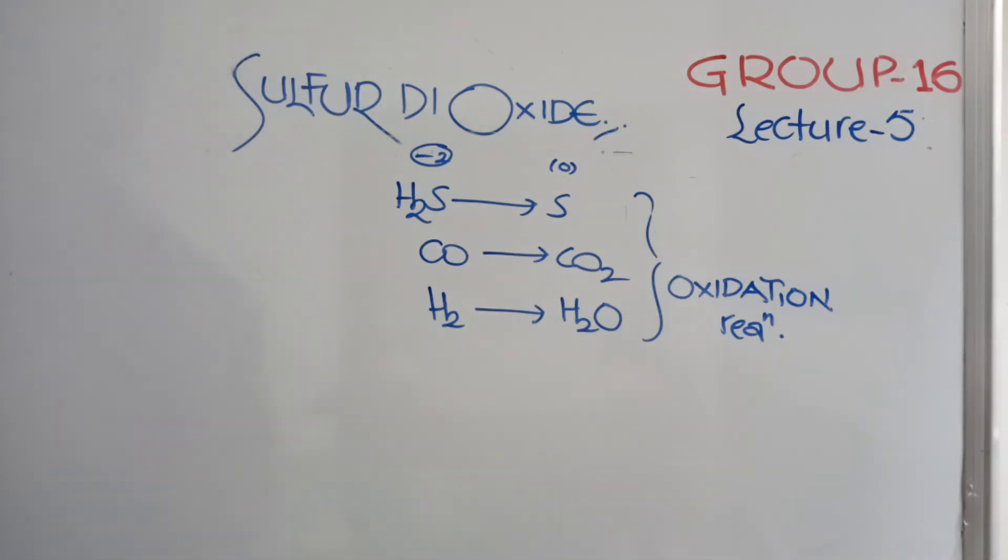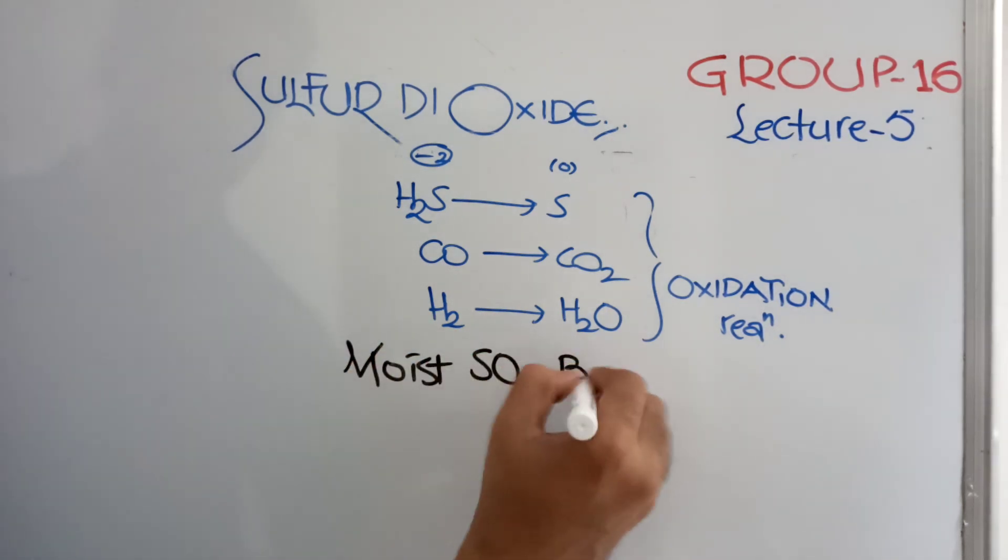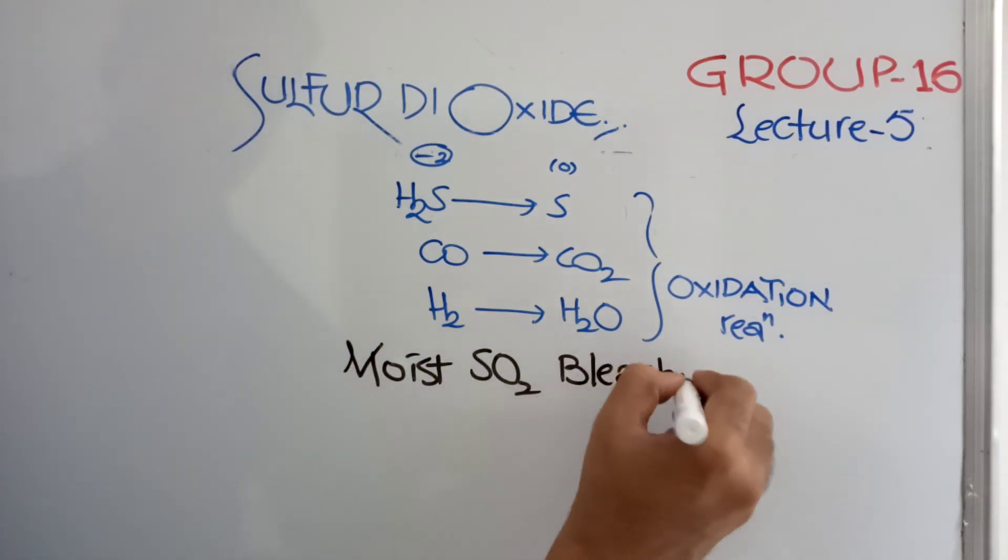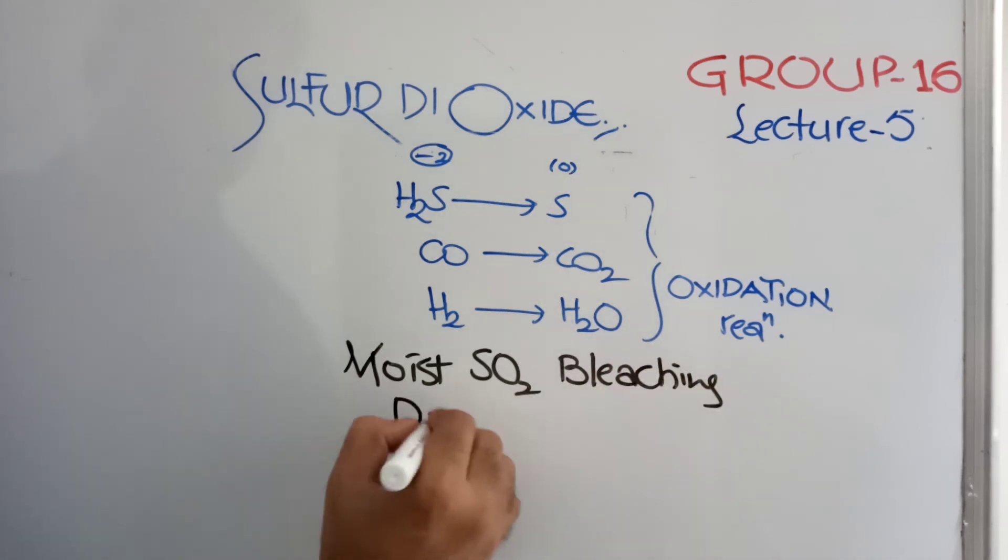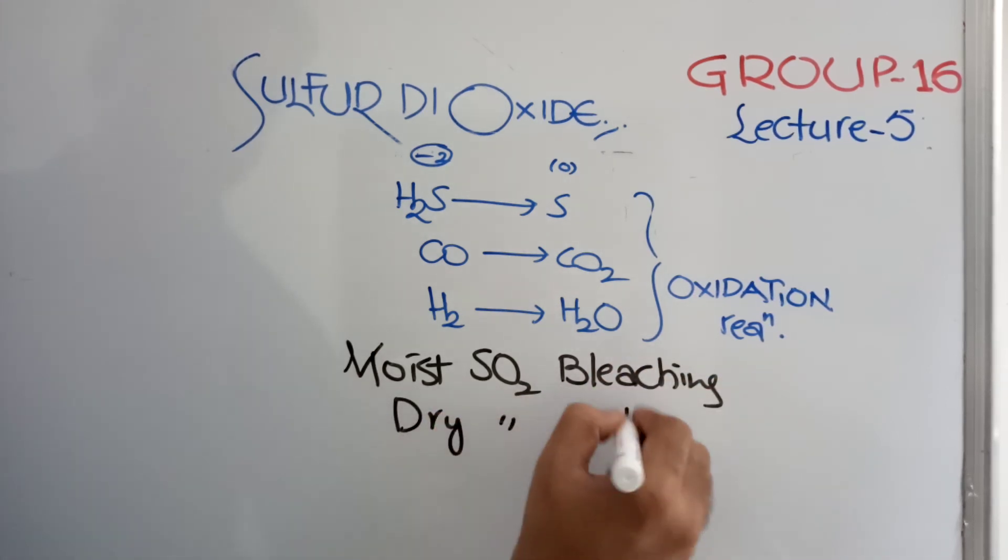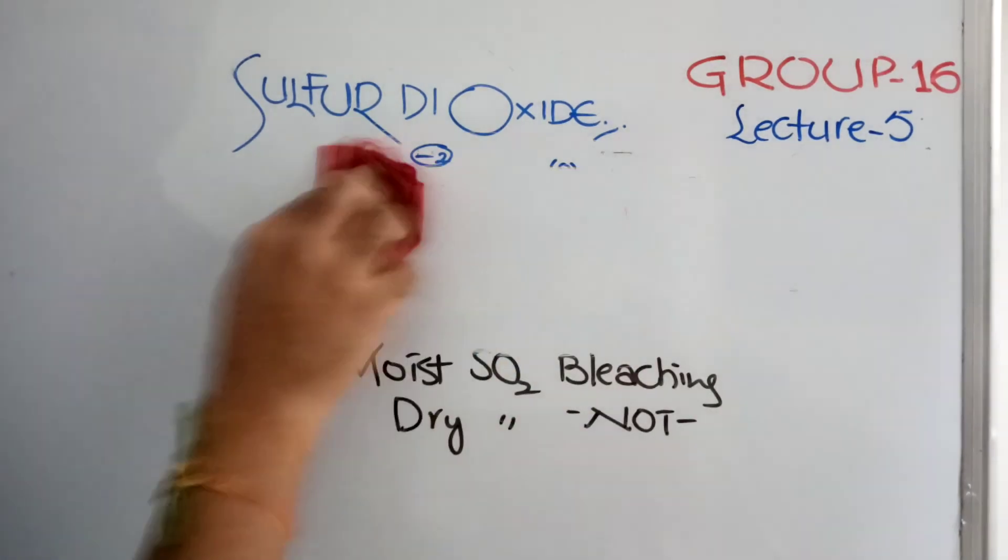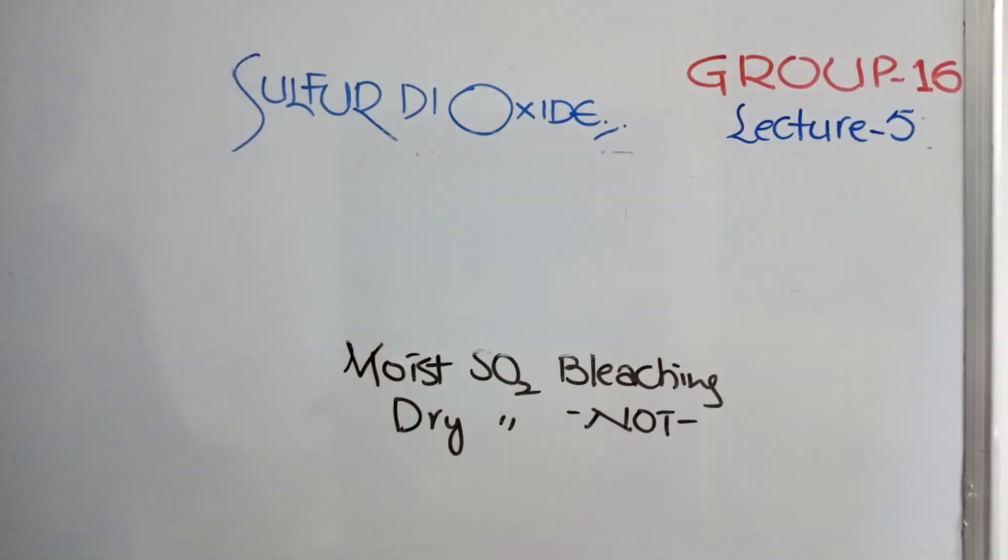Moist sulfur dioxide is bleaching agent. This is one very special. But dry sulfur dioxide is not. Very special point you see. Moist sulfur dioxide is only bleaching agent. But not dry sulfur dioxide. Why? The problem is. Okay. Just have a look here. We will conclude this sulfur dioxide now.